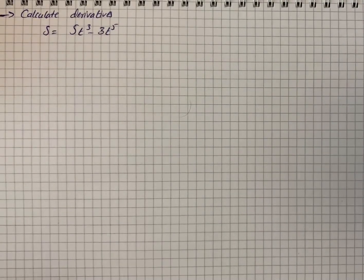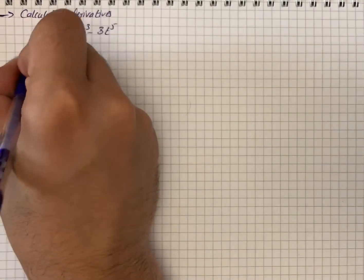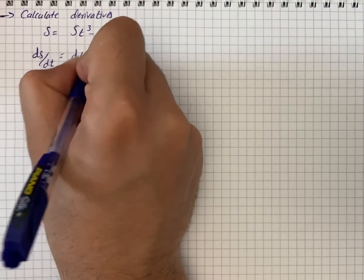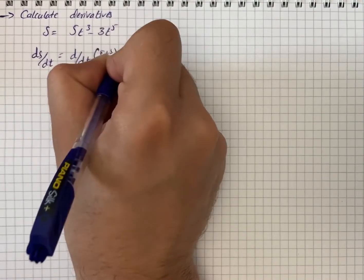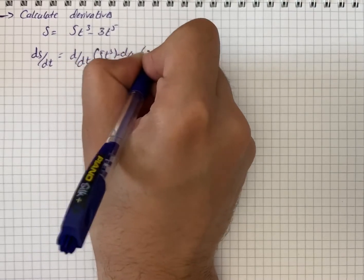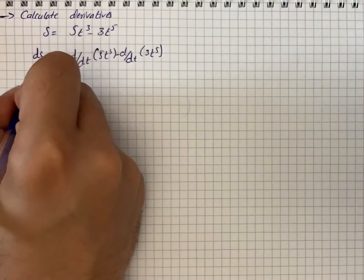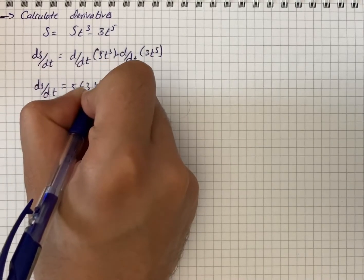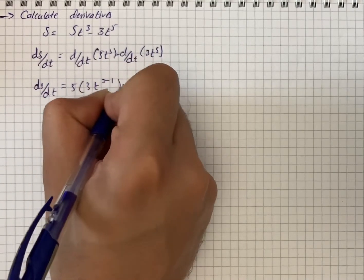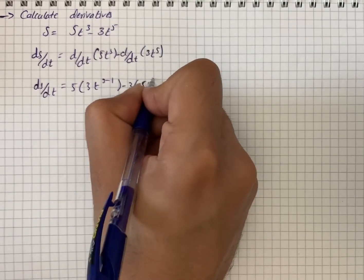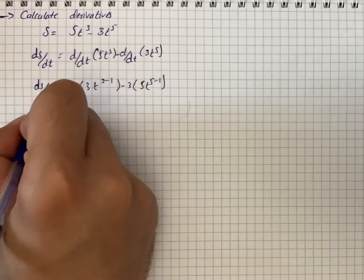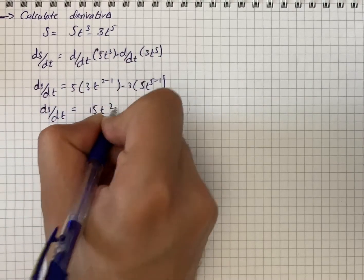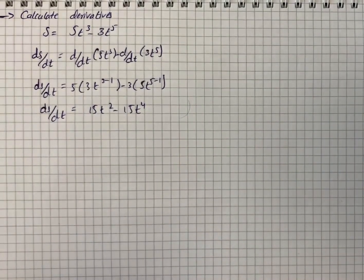We have to calculate the derivative. First, ds/dt is equal to d/dt of 5t³ minus d/dt of 3t⁵. Applying the power rule, ds/dt equals 5 times 3t² minus 3 times 5t⁴, so ds/dt equals 15t² minus 15t⁴.